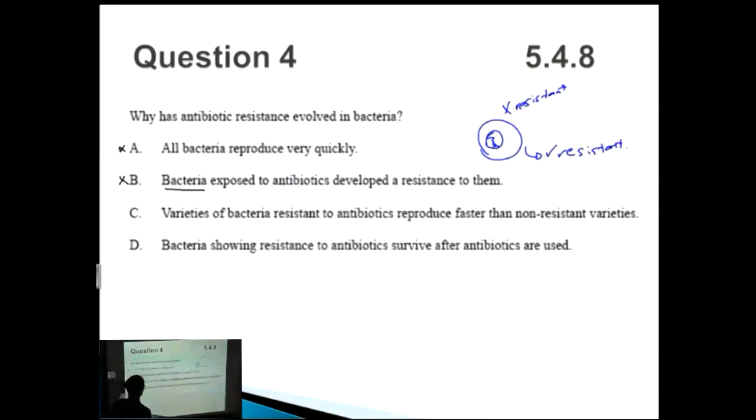How about C? Varieties of bacteria resistant to antibiotics reproduce faster than non-resistant varieties. Yeah, so once again this is not really correct, because they don't reproduce faster. It's not about reproducing faster, it's the fact that these ones that are resistant, they can survive. It doesn't matter how fast these ones reproduce, because they can reproduce a million times and they all get killed off by the antibiotics. So it's not C. So the correct answer, you guessed it, is D. Bacteria showing resistance to antibiotics survive after antibiotics are used. That is the correct answer.